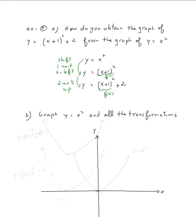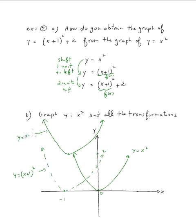Now let's do that in the graph. This is the graph of y equal x squared. First, we need to shift it one unit to the left, so we need negative one here. This gives us y equal x plus one squared. Then we shift the second graph two units up — so this is two units up — and we get this graph, which is y equal x plus one squared plus two.